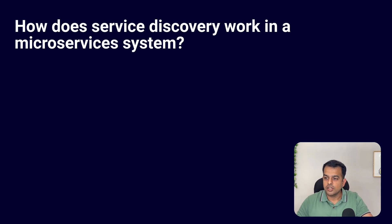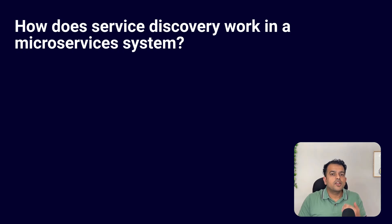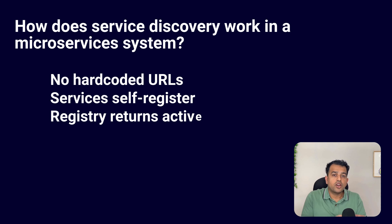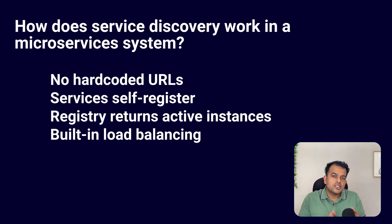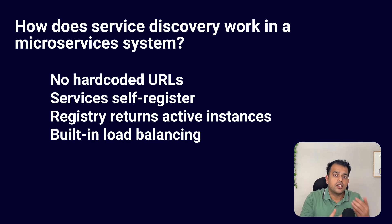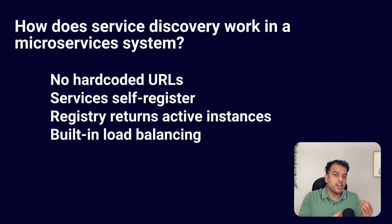The interviewer moved to a microservices question: how does service discovery work in a microservices system? Service discovery helps services find each other without hard-coding URLs. We use tools like Eureka, Consul, or AWS Cloud Map. Each service registers itself with the service discovery server, and when one service needs another, it asks the registry for the active instance. Load balancing can also happen through the discovery layer, making the system more dynamic and scalable. You can mention whichever tool you used in your project and explain it in detail.